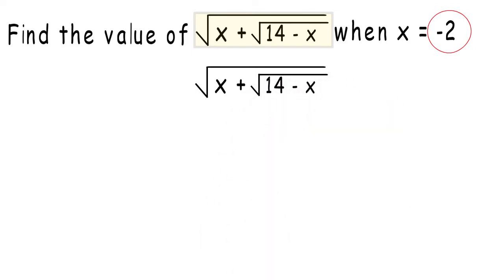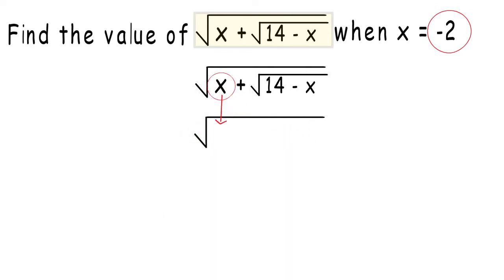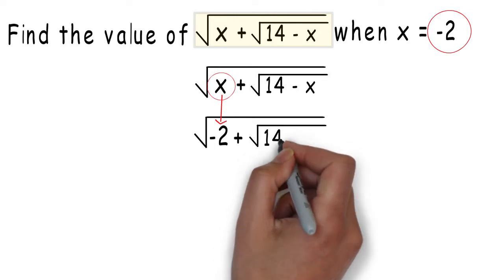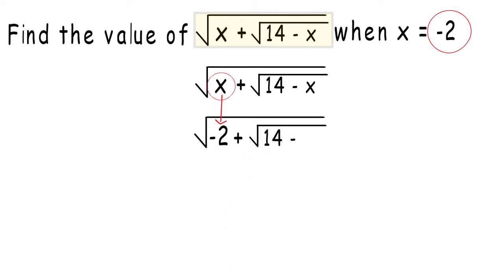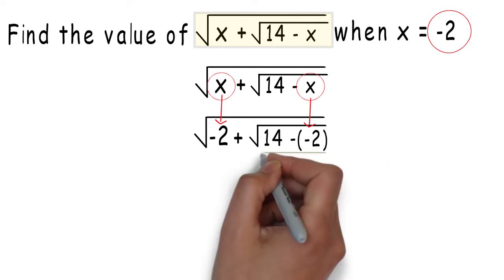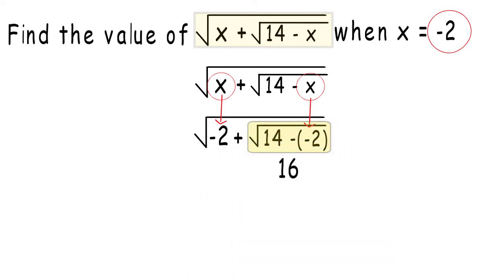So this will be the square root of negative 2 plus the square root of 14 minus negative 2. Now, 14 minus negative 2 is 16. The square root of 16 is 4.